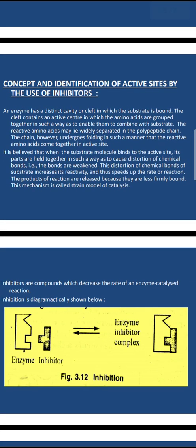An enzyme has a distinct cavity or cleft in which the substrate is contained. The active center contains amino acids grouped together in such a way as to enable them to combine with the substrate. The reactive amino acids may lie widely separated in the polypeptide chain, and the chain undergoes folding such that the reactive amino acids come together at the active site.